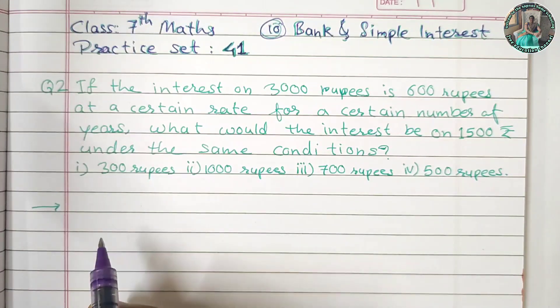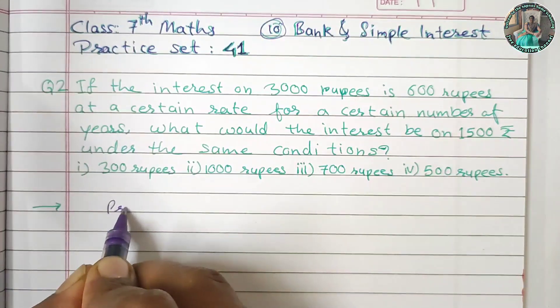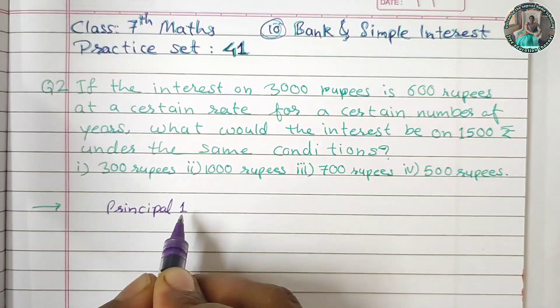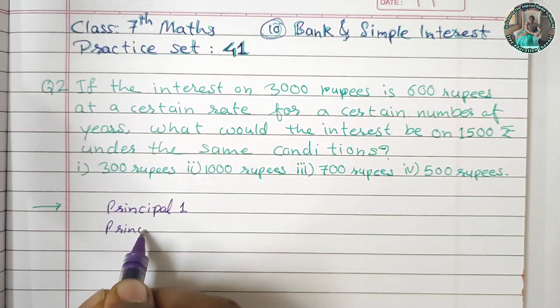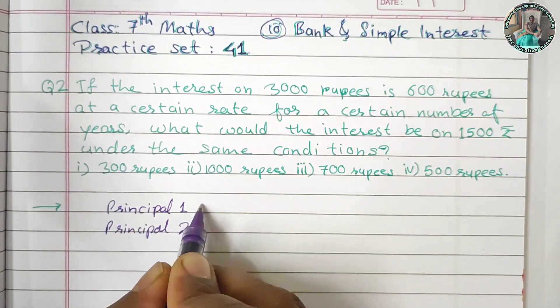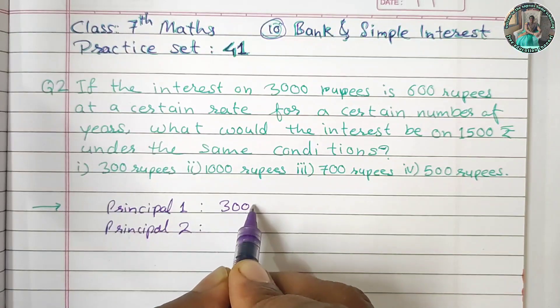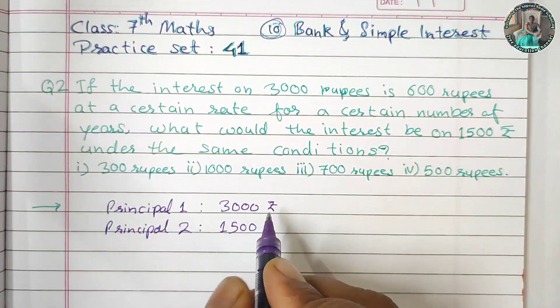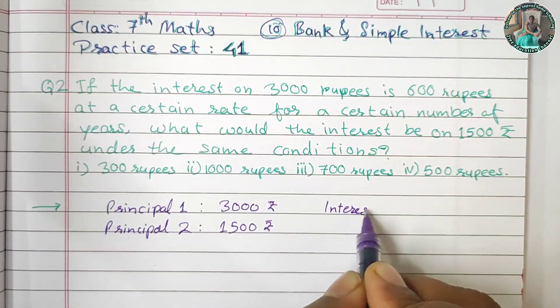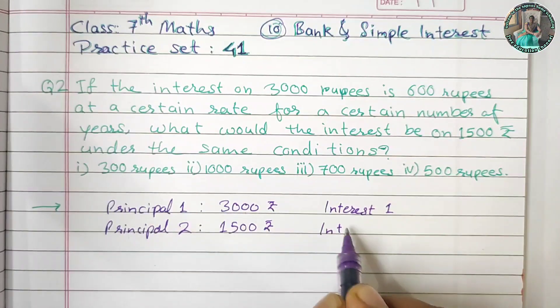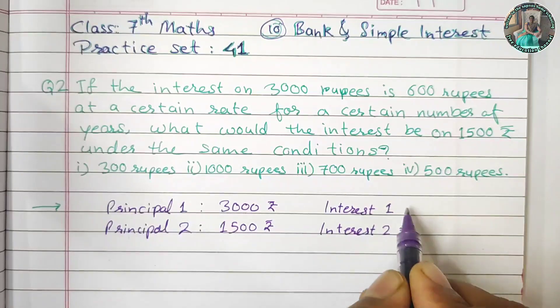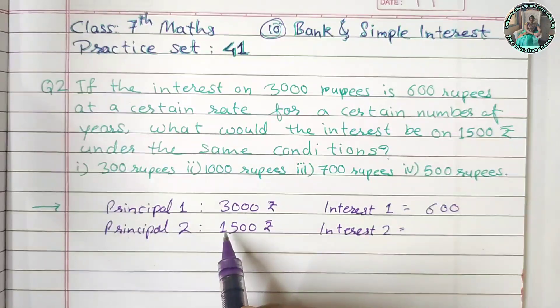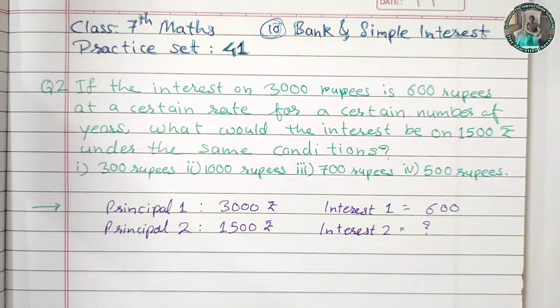Now we will solve the question. Principal 1 and Principal 2. The first is 3,000 rupees and the second is 1,500 rupees. Interest 1 and Interest 2. For 3,000 rupees, interest is 600. For 1,500 rupees, interest is what we need to find.